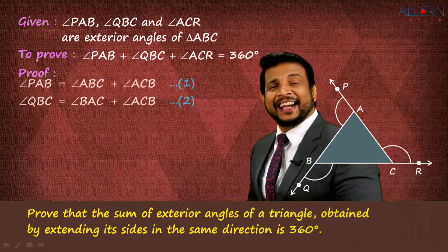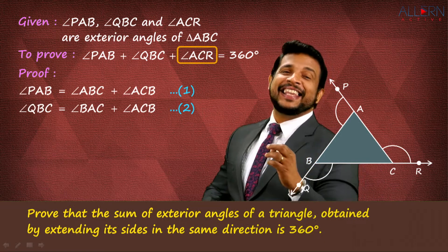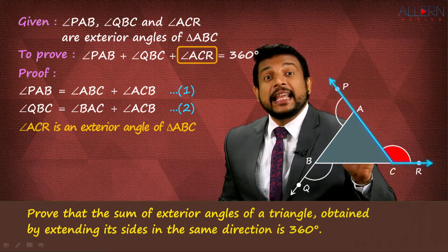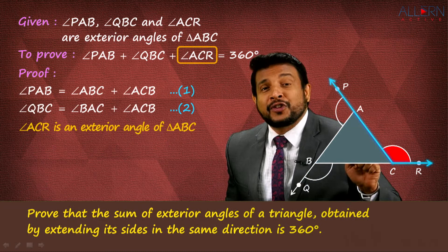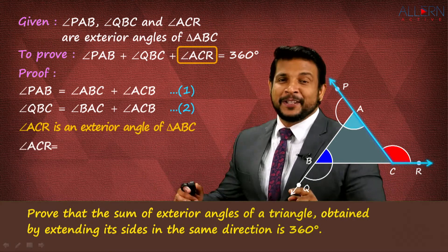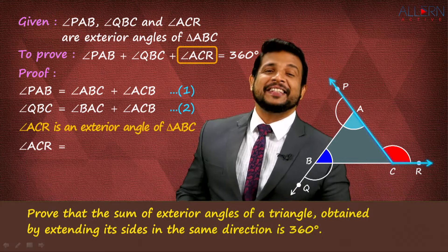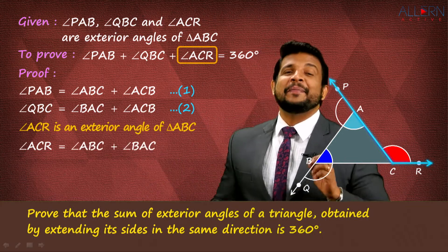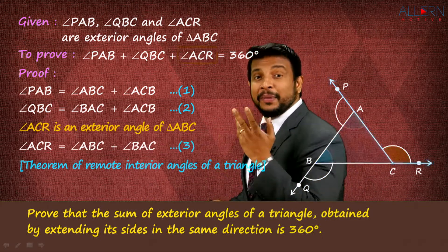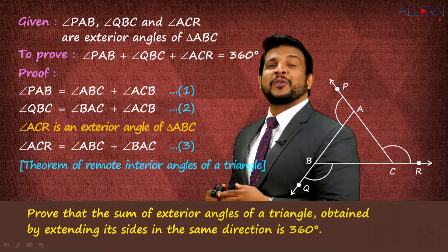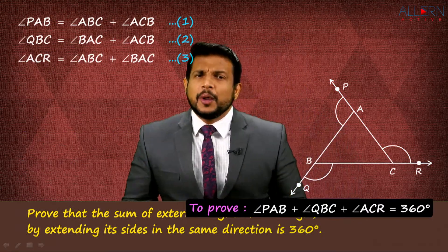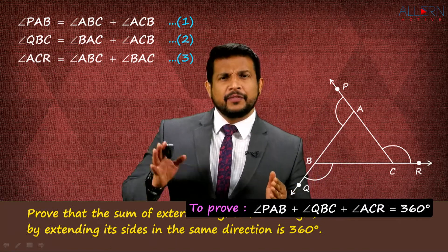Now for the third one — angle ACR. Angle ACR is an exterior angle of triangle ABC, so the two remote interior angles are angle BAC and angle ABC. Therefore, angle ACR = angle ABC + angle BAC. That is Result 3, with the same reason: theorem of remote interior angles of a triangle.